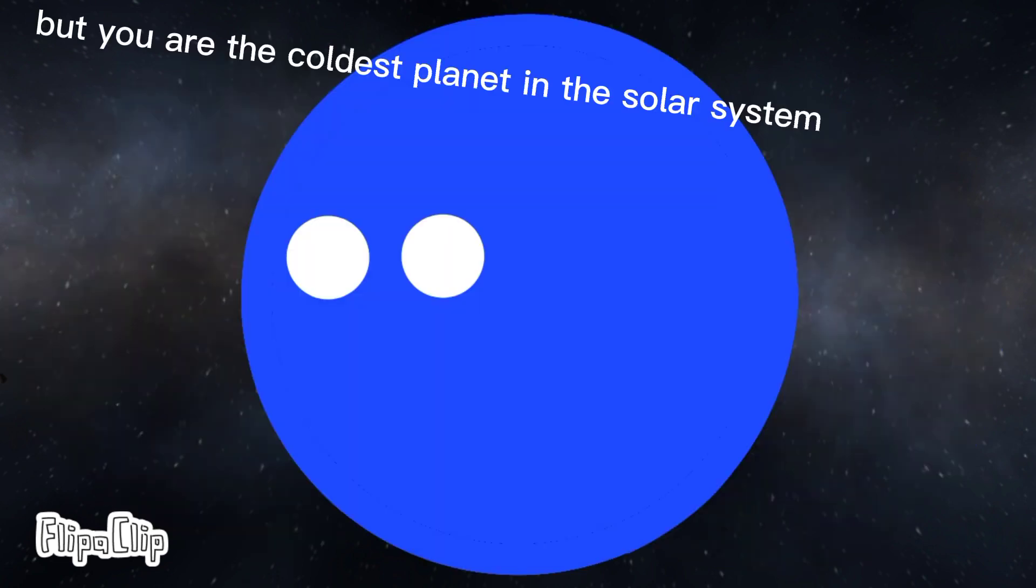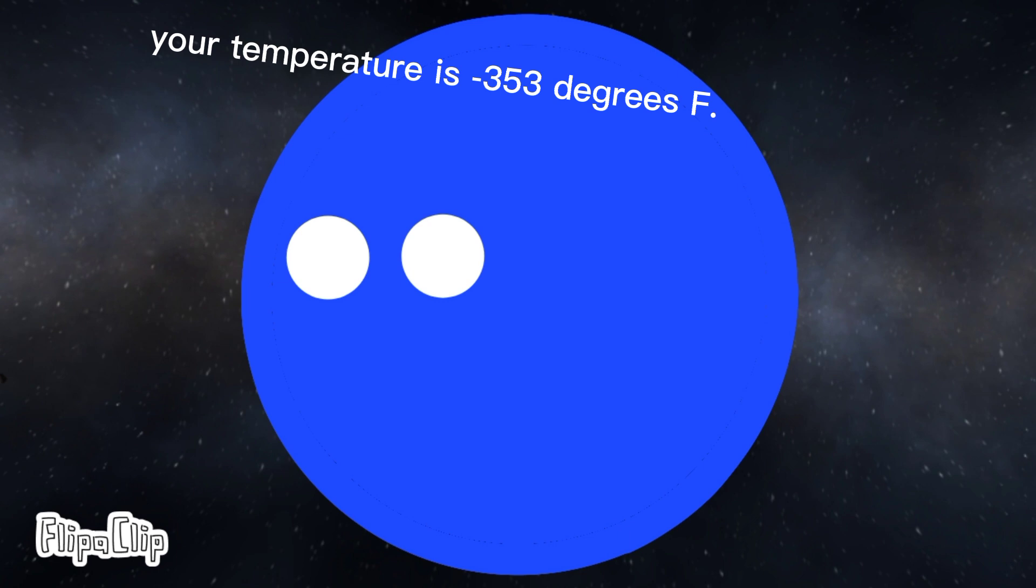But you are the coldest planet in the solar system. Your temperature is minus 353 degrees F. That's super, super cold. You are the coldest planet and Venus is the hottest.